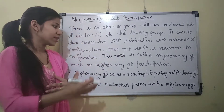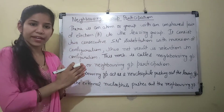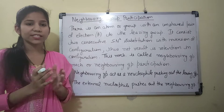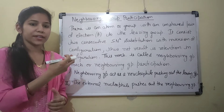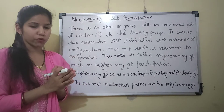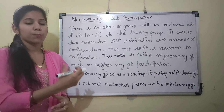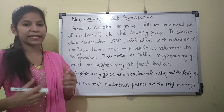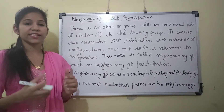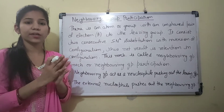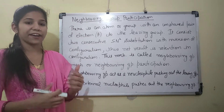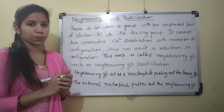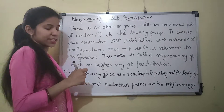This mechanism is called the neighboring group mechanism. In the first step, the neighboring group acts as a nucleophile and pushes out the leaving group. In the second step, an external nucleophile is present and attacks toward the neighboring group.